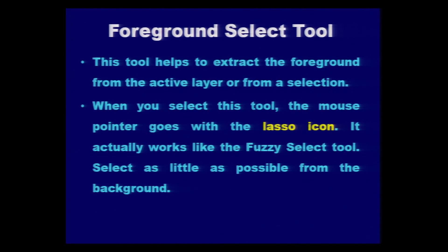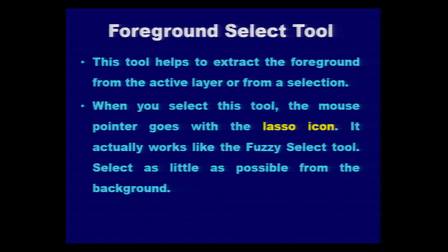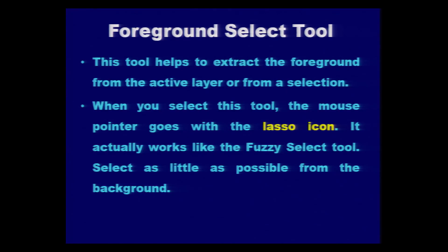The fifth tool is the Foreground Select tool, which is somewhat different from the earlier tools. It is helpful to extract the foreground from the active layer or from a selection. When you start using this tool, the mouse pointer shows the lasso icon. It actually works like the fuzzy select tool and selects as little as possible from the background — so you should select less area from background pixels.